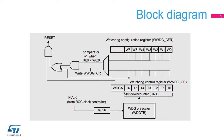The PCLK clock from the RCC clock controller is used to clock the watchdog peripheral. Bits T[6:0] from the watchdog control register count down until they roll over from 0x40 to 0x3F, which then generates a reset. Bits W[6:0] from the watchdog configuration register contain the window value. Bits T[6:0] and W[6:0] are compared in order to evaluate the time to refresh the down-counter in the configurable window. If the down-counter is reloaded too early or too late, the window watchdog will initiate a reset.